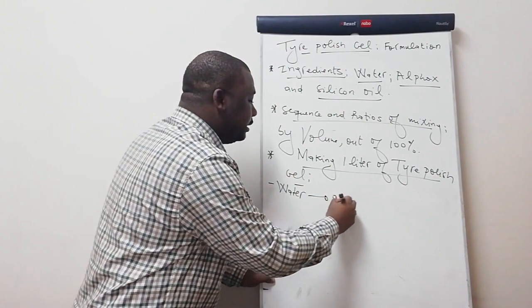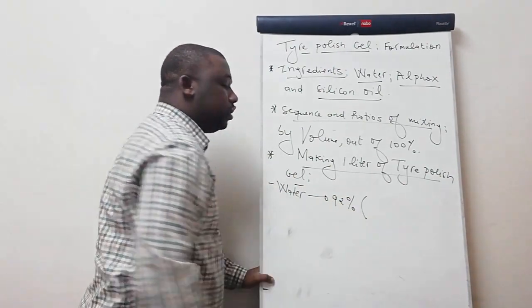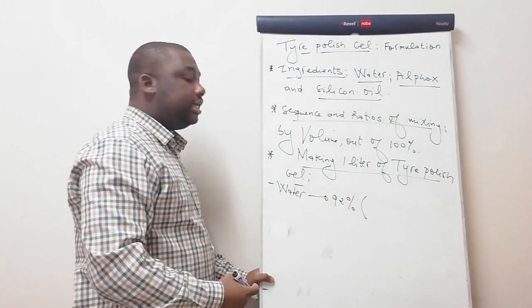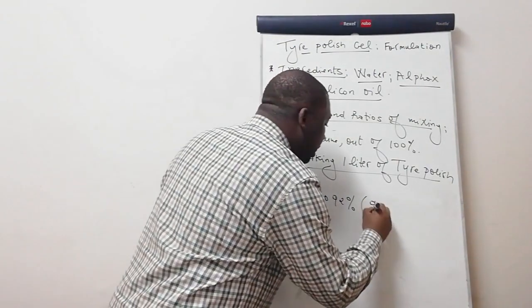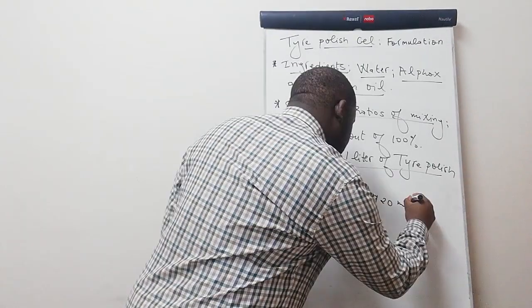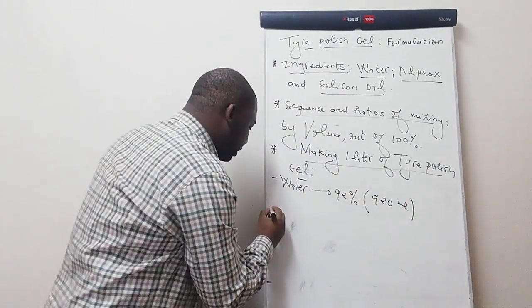The first ingredient to consider here is water. Water should be 92% of the total volume. Out of the one liter that we're manufacturing, we need to consider 920 ml of water.